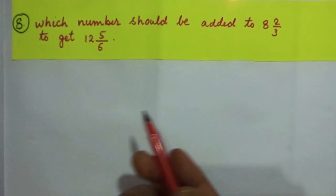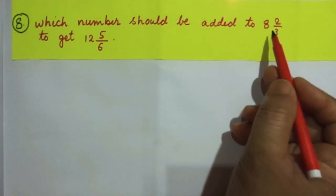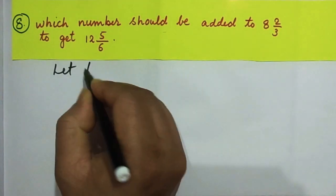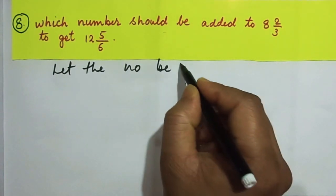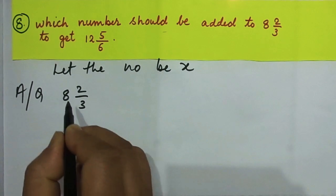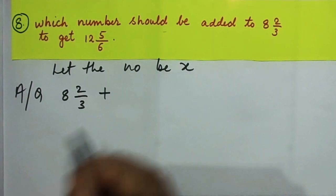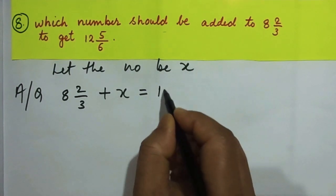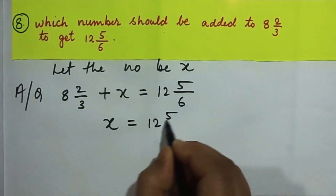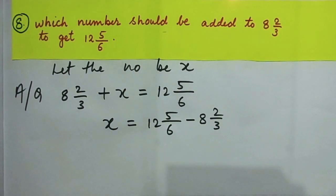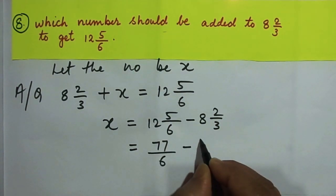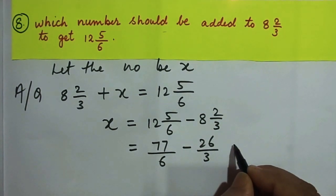Question 8: Which number should be added to 8 and 2/3 to get 12 and 5/6? Let the number be x. According to the question, 8 and 2/3 plus x equals 12 and 5/6. Therefore, to find x, we calculate x = 12 and 5/6 minus 8 and 2/3, which gives 77/6 minus 26/3.